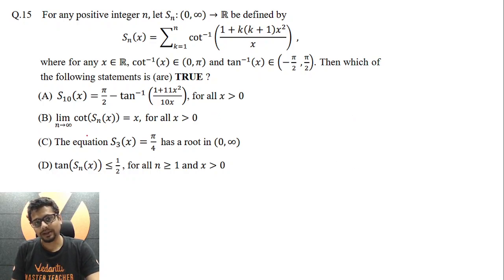Also note that in the options everywhere we are talking about x greater than 0. So that means k is also some natural number, k varying from 1 to n. The summation is going on, k varying from 1 to n. So k is some natural number, x is positive, so that means this inside expression is positive.